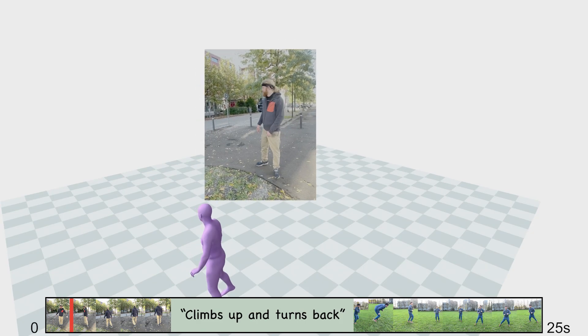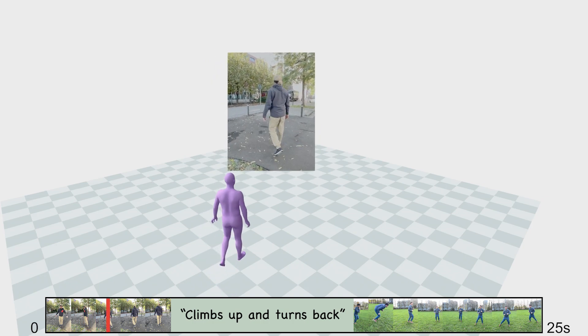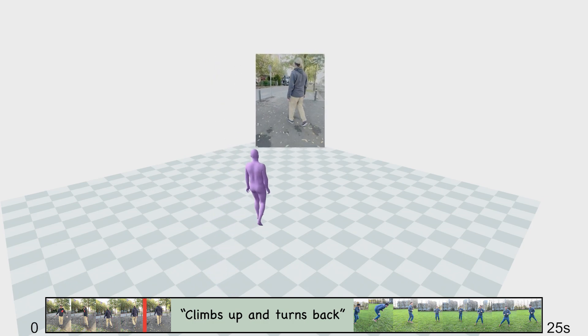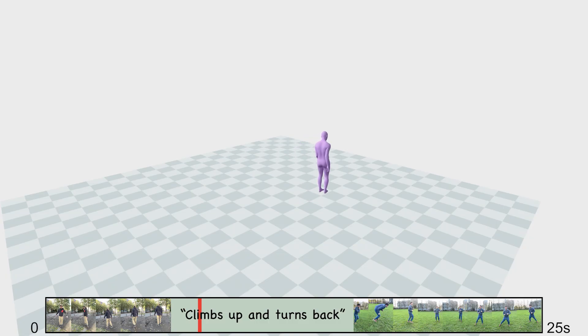Genmo can accurately recover precise global human motion from challenging monocular videos recorded with dynamic cameras, generate diverse text-conditioned motions, and create seamless transitions between multimodal conditions such as video-to-text-to-video.